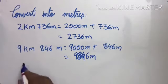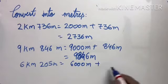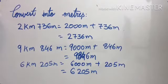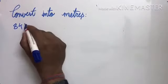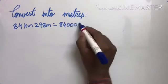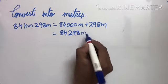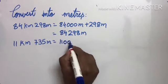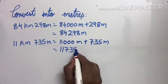Six kilometers two hundred and five meters: six thousand meters plus two hundred and five meters, so our answer is six thousand two hundred and five meters. If it is eighty-four kilometers and two hundred and ninety-eight meters, eighty-four kilometers becomes eighty-four thousand meters, plus two hundred and ninety-eight meters. Our answer is eighty-four thousand two hundred and ninety-eight meters. Another example gives us eleven thousand seven hundred and thirty-five meters.